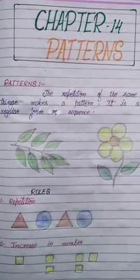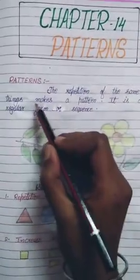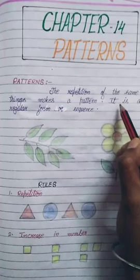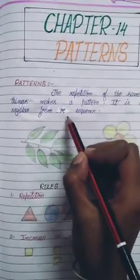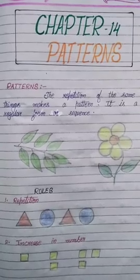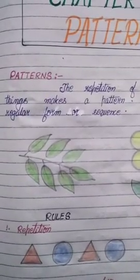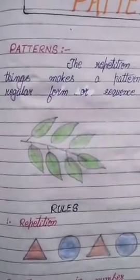Children, what is pattern? The repetition of the same things make a pattern. It is a regular form or sequence. Something which are repeating and repeating are called patterns.